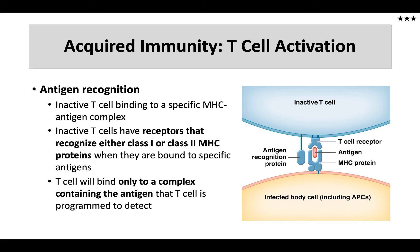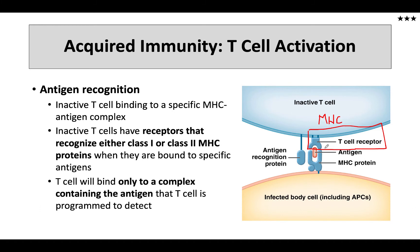T-cell activation is a multi-step process. This process is necessary whether or not the T-cell is a cytotoxic T-cell or a helper T-cell. It involves the activation of two different receptors found on the T-cell. One of those receptors, shown here, is called the T-cell receptor. I prefer to call this one the MHC recognition receptor, because it is in fact binding to the MHC complex.